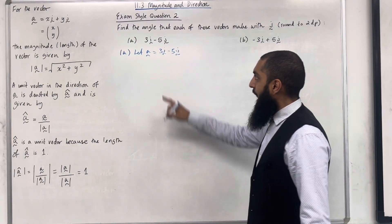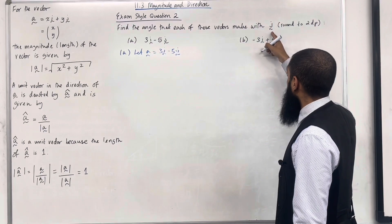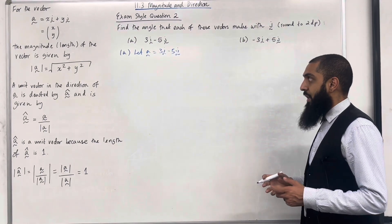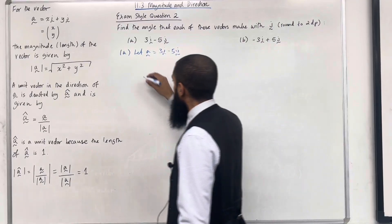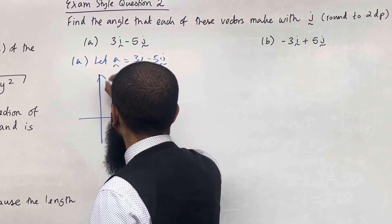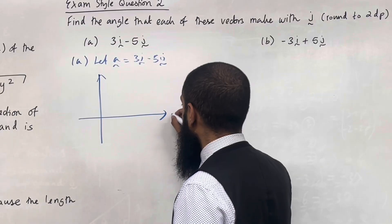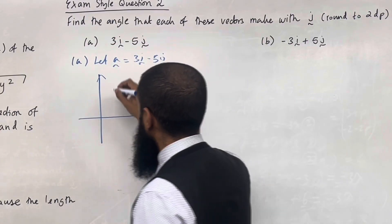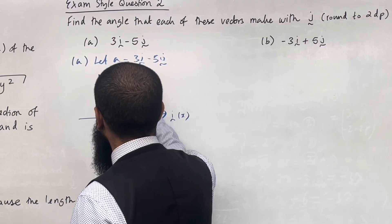We want to work out the angle between vector A and the unit vector j. To do this, I'll draw vector A on a coordinate grid. The horizontal axis is i, which is the x-axis, and the vertical axis is j, which is the y-axis.